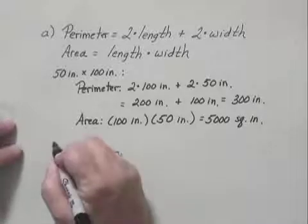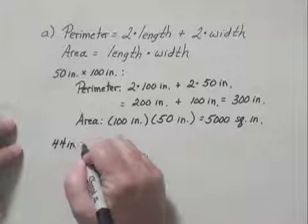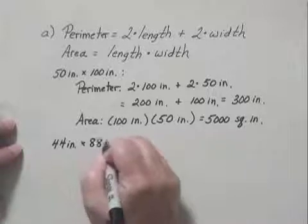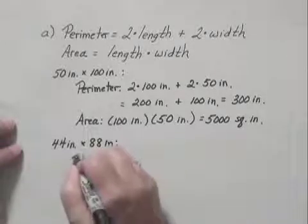The second table was 44 inches by 88 inches. We find the perimeter again.